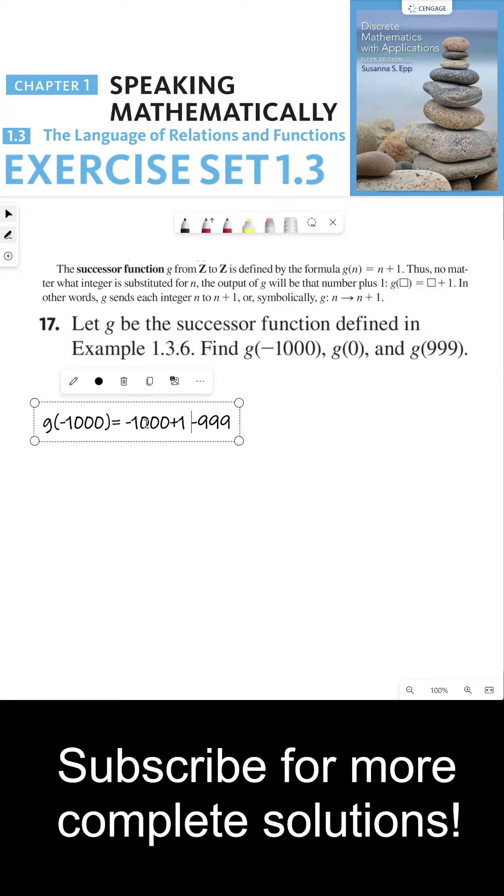For g(0), this is 0 + 1, which is 1, and g(999) is 1000. I think this is pretty straightforward. Thanks, everyone, and I'll see you all in the next video.